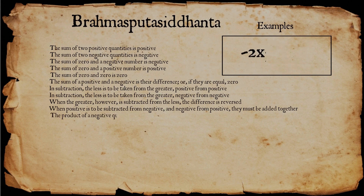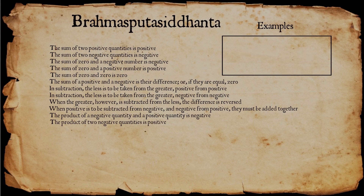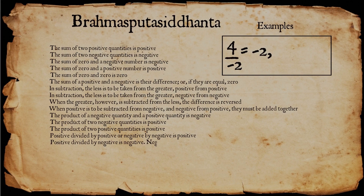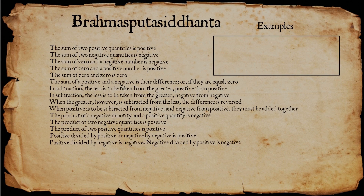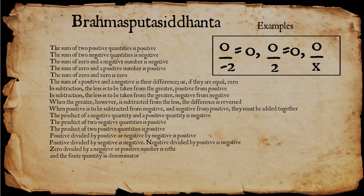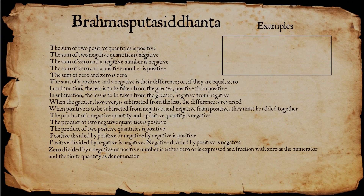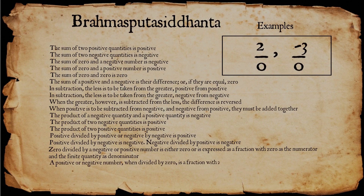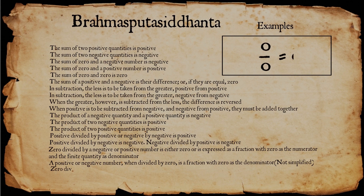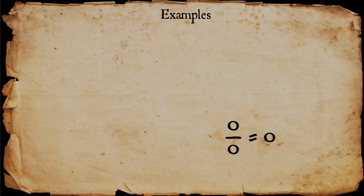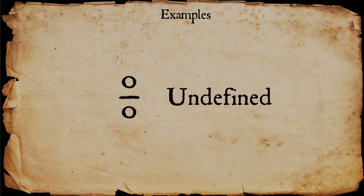The product of a negative quantity and a positive quantity is negative. The product of two positive quantities is positive. Positive divided by positive, or negative divided by negative, is positive. Positive divided by negative is negative. Negative divided by positive is negative. Zero divided by a negative or positive number is either 0, or expressed as a fraction with 0 as numerator and a finite quantity as denominator. If a positive or negative number is divided by 0, it is a fraction with 0 as denominator. Zero divided by 0 is 0. His rules for arithmetic on negative numbers and 0 are quite close to modern understanding, except that in modern mathematics, division by 0 is left undefined.